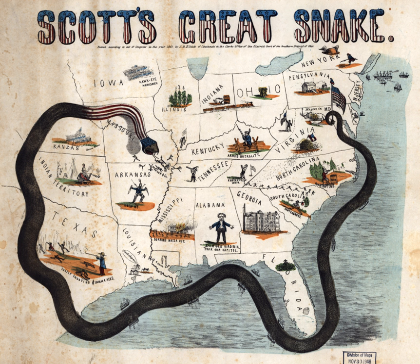One of the early Union objectives in the war was the capture of the Mississippi River, in order to cut the Confederacy in half. The key to the river was New Orleans, the South's largest port and greatest industrial center. In April 1862, a Union naval task force commanded by Commander David D. Porter attacked Forts Jackson and St. Philip, which guarded the river approach to the city from the south. While part of the fleet bombarded the forts, other vessels forced a break in the obstructions in the river and enabled the rest of the fleet to steam upriver to the city. A Union Army force commanded by Major General Benjamin Butler landed near the forts and forced their surrender.